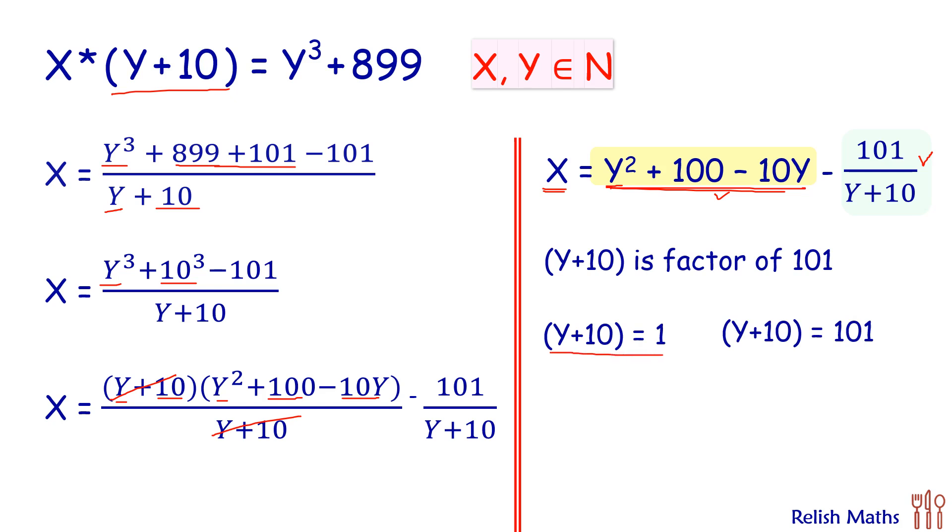When we solve it, we'll get Y as negative 9, but given is Y is a natural number. So this option is invalid.